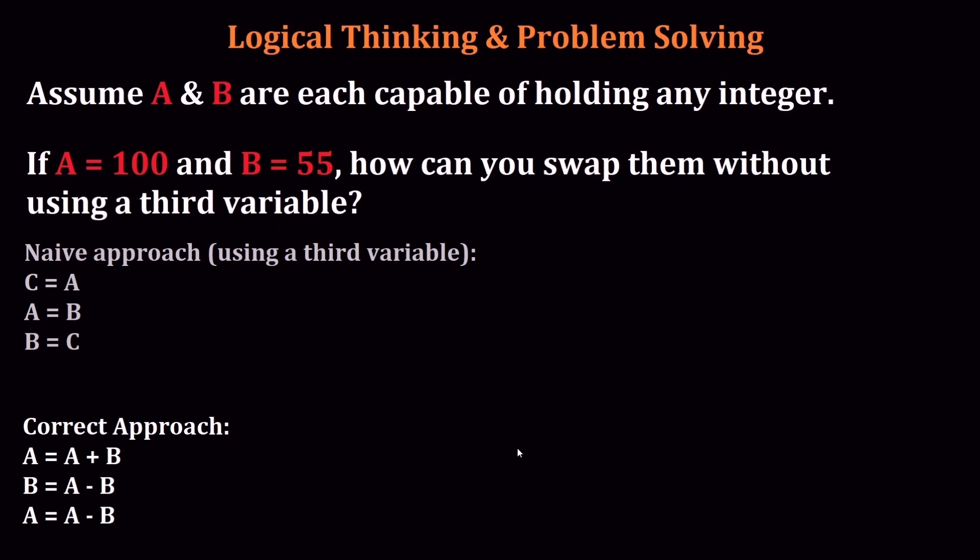Now to be fair, when we gave this question to programmers, we didn't do it exactly like this. We would actually word it as: you have a computer and the computer only has two memory addresses, and it doesn't have a swap command. All it has is addition, subtraction, and you can load A and load B or store A and store B. There's no more than two memory locations. So how are you going to swap them?